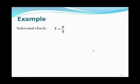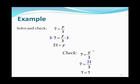Here's another example: 7 equals y divided by 3. This is a division equation, so we multiply by 3 on both sides. The variable is on the right side; multiplying by 3 cancels the 3s, giving y by itself. On the left-hand side, 3 times 7 is 21. Substituting y equals 21 back into the original equation gives a true statement, confirming the correct answer.